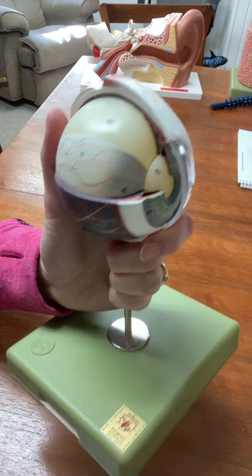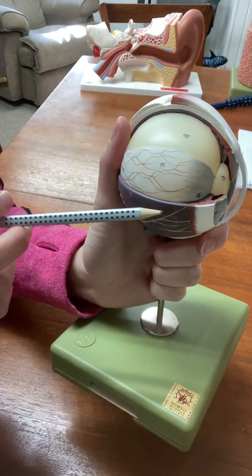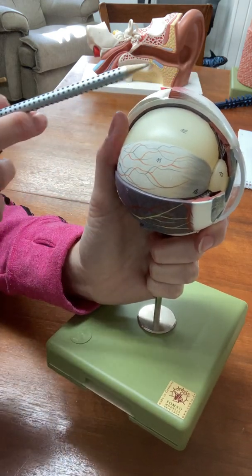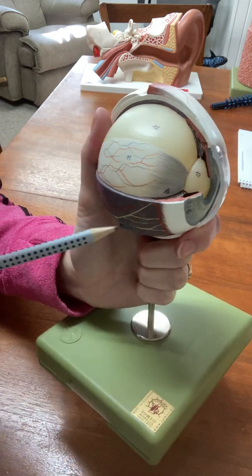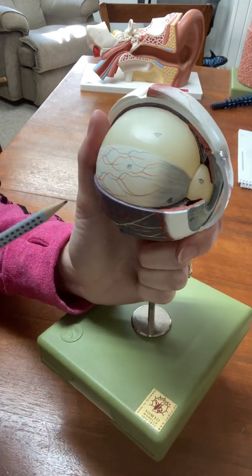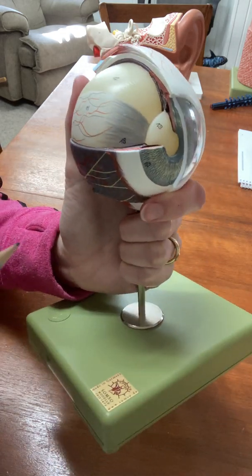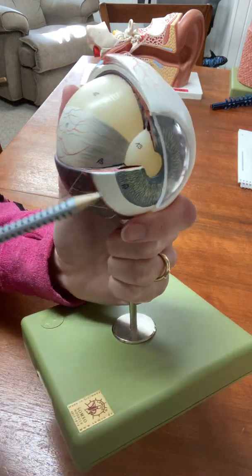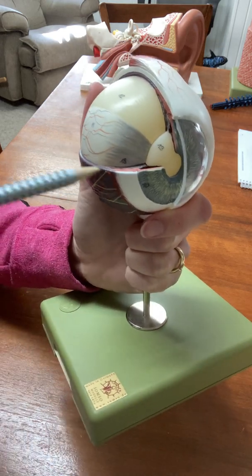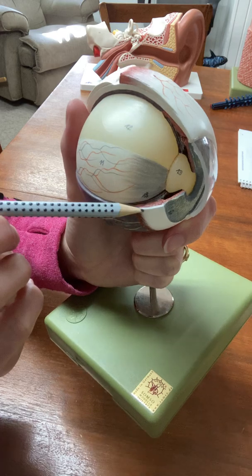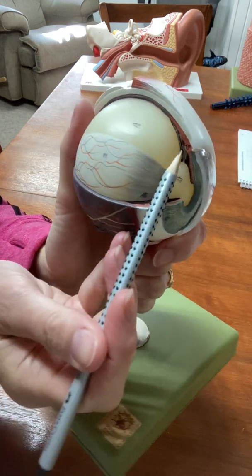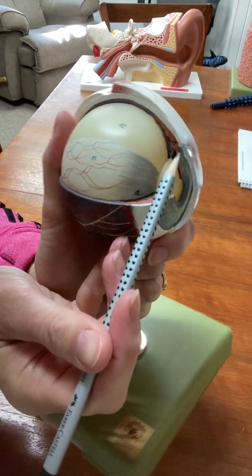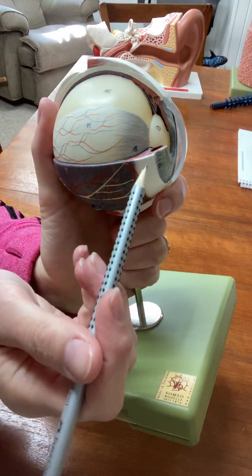Now remember three dimensionally the choroid and all the layers come up around the eye and make a sphere. So the choroid is just cut open so you could see the inside of the eye, but in real life it goes all the way around. So you can see this thickened area here and here. There's a number 17 right there, which is called the ciliary body.